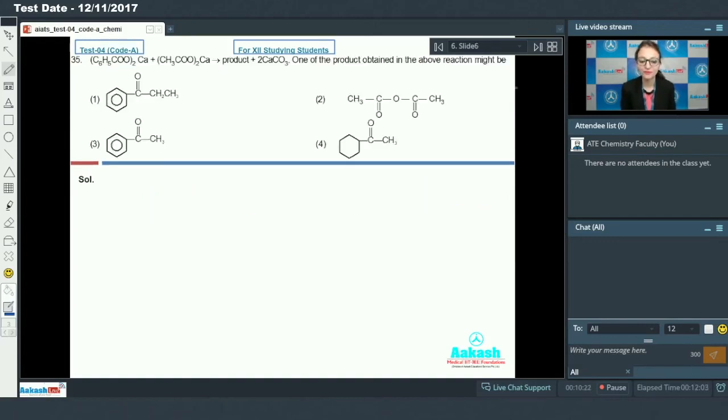Next question number 35: Calcium salt of benzoic acid plus calcium salt of acetic acid reacts to form product and calcium carbonate. One of the product obtained in above reaction might be. This reaction is method of preparation of ketone. Calcium salt of benzoic acid when reacts with calcium salt of acetic acid, here we will get number of products.